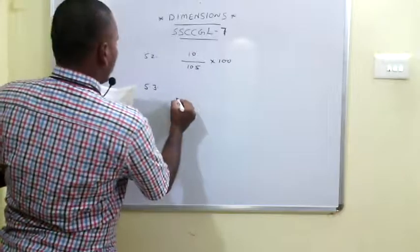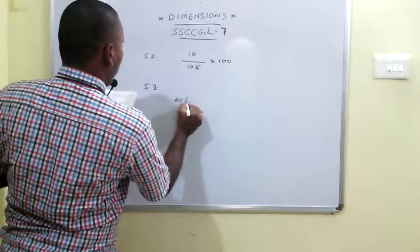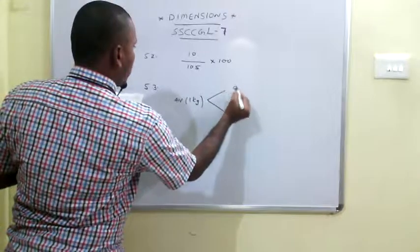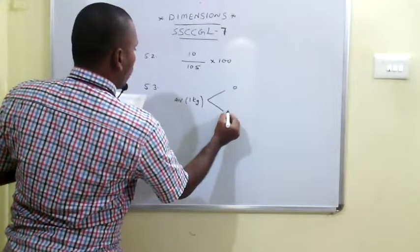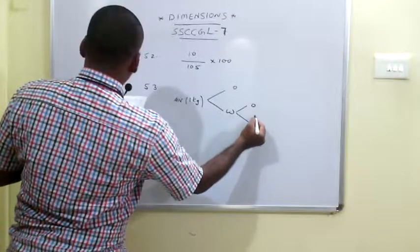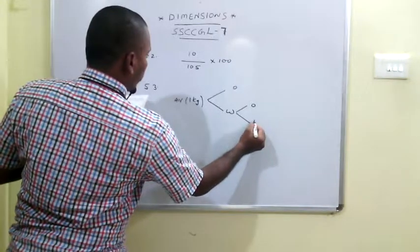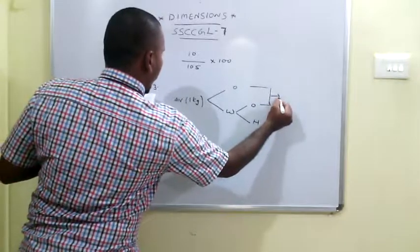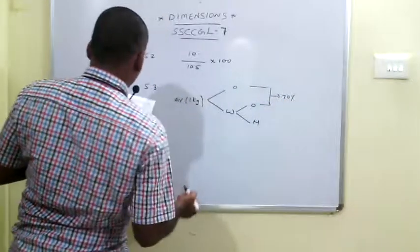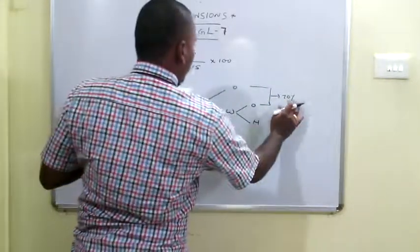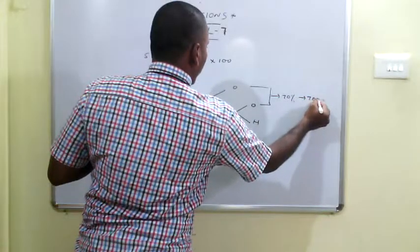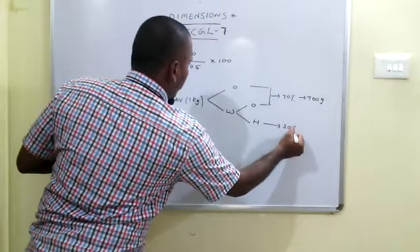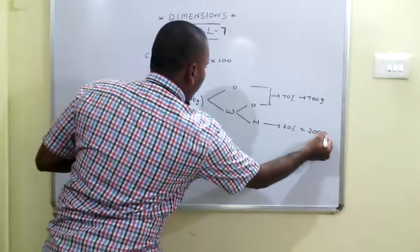In one kg of air, we have oxygen as well as water vapour. In this water vapour, we have oxygen along with hydrogen. The oxygen from both sources is 70% of the weight, which is 700 grams. Automatically, the remaining hydrogen accounts for 30%, which is 300 grams.